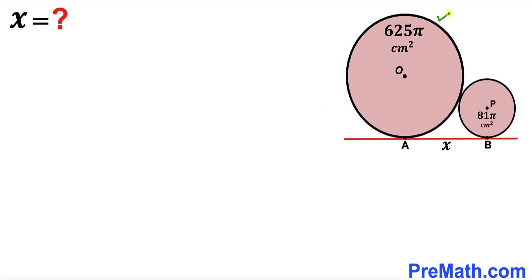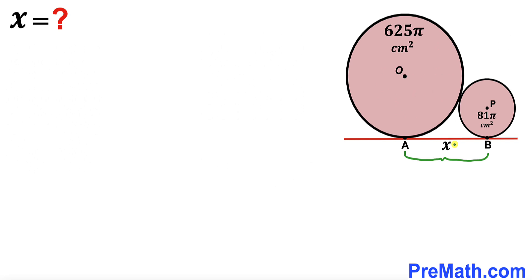Welcome to pre-math. We have two circles of different dimensions that are tangent to each other. The center of the larger circle is O, and its area is 625π cm². The center of the smaller circle is P, and its area is 81π cm². A straight line AB is tangent to both circles simultaneously, and this distance AB is represented by X. Our task is to find the value of X.